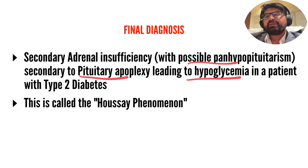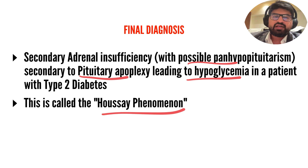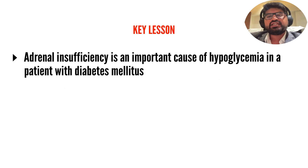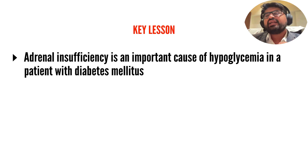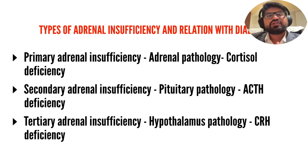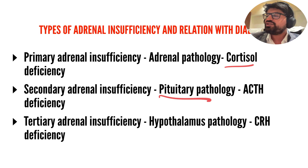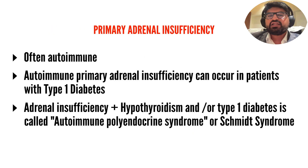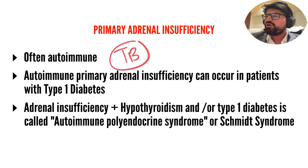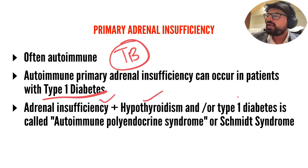This patient had secondary adrenal insufficiency with panhypopituitarism due to pituitary apoplexy, leading to hypoglycemia. Hypoglycemia in a patient with panhypopituitarism is known as Houssay's phenomenon. Adrenal insufficiency is a very important and often overlooked cause of hypoglycemia in diabetic patients. All three types can occur: primary (adrenal pathology), secondary (pituitary), and tertiary (hypothalamus/CRH deficiency). Primary adrenal insufficiency is often autoimmune but tuberculosis is also important. Autoimmune primary adrenal insufficiency with hypothyroidism and/or type 1 diabetes is known as Autoimmune Polyglandular Syndrome type 2 — Schmidt syndrome.